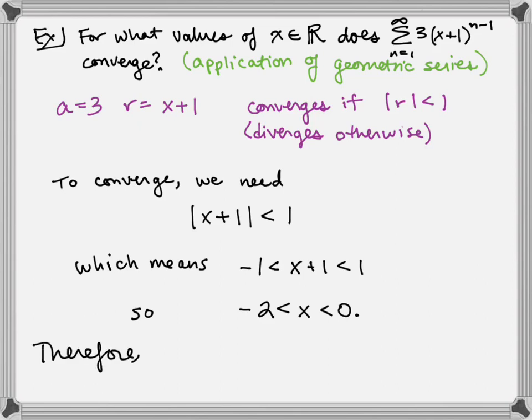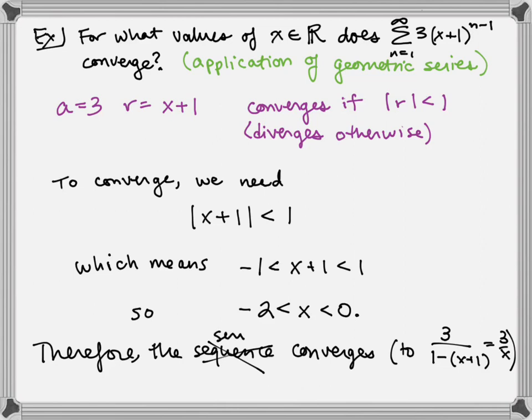That tells us that our series converges, and in fact it converges to 3/(1-(x+1)), as long as x is in the interval (-2, 0). It can't include those endpoints because if it did, x+1 would be equal to 1 in absolute value, and that's bad news for us because that would make our series divergent.